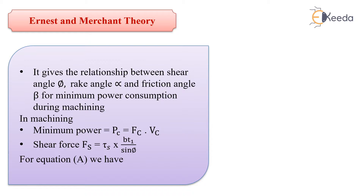If you want to write down the minimum power in metal cutting, the formula for power is cutting force into cutting velocity plus feed force into feed velocity. But the product of feed force and feed velocity is very small, so we neglect that. We can simply write cutting power Pc equal to Fc into Vc.